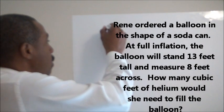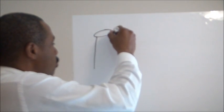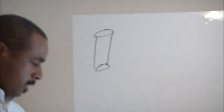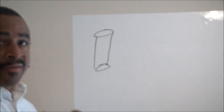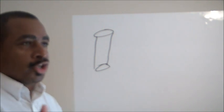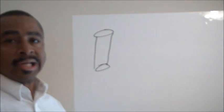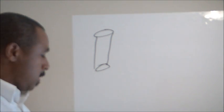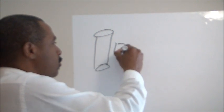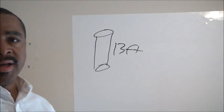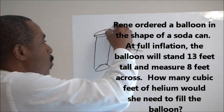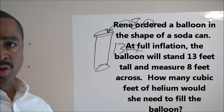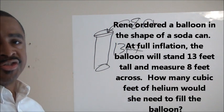The first thing we want to do here is we want to just kind of draw this soda can. Excuse my drawing. I'm not that great of an artist. So we have this picture of a soda can, it's like if you've ever seen a Coke balloon or something like that in the shape of a Coke can. The information in the problem tells us that this inflated is 13 feet tall at full inflation, and that it's 8 feet across. So I'm just going to draw an arrow there so we can see the across of this thing or the diameter of this thing is 8.